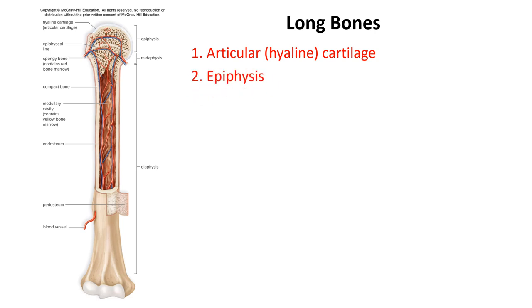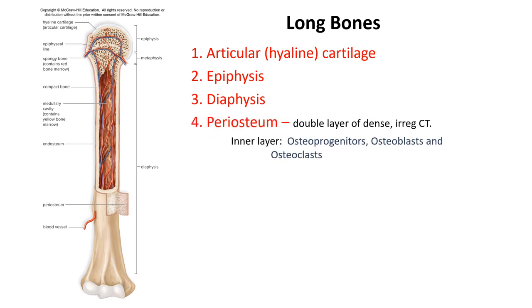The epiphysis is quite striking in the femur — a very noticeable bulging at the end, both distal and proximal. Then you have the diaphysis, the shaft portion of the bone, inside which is a cavity containing yellow bone marrow.